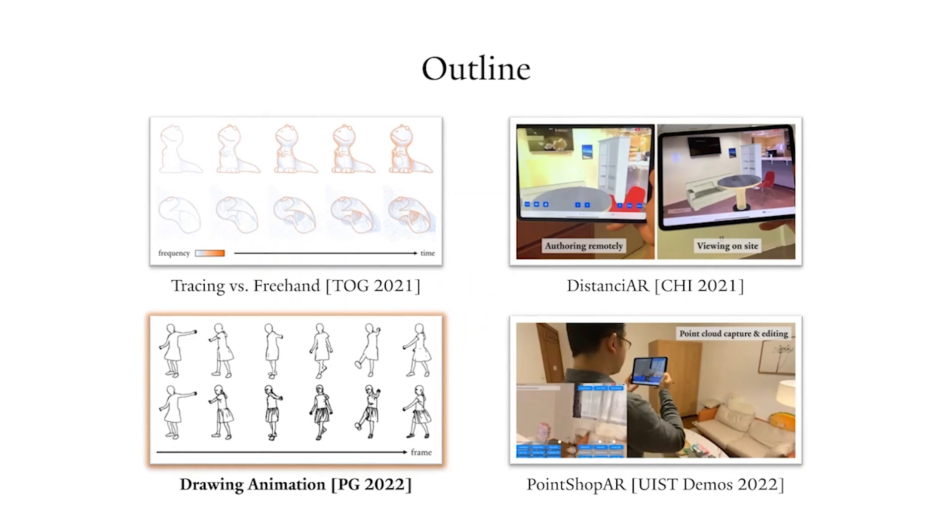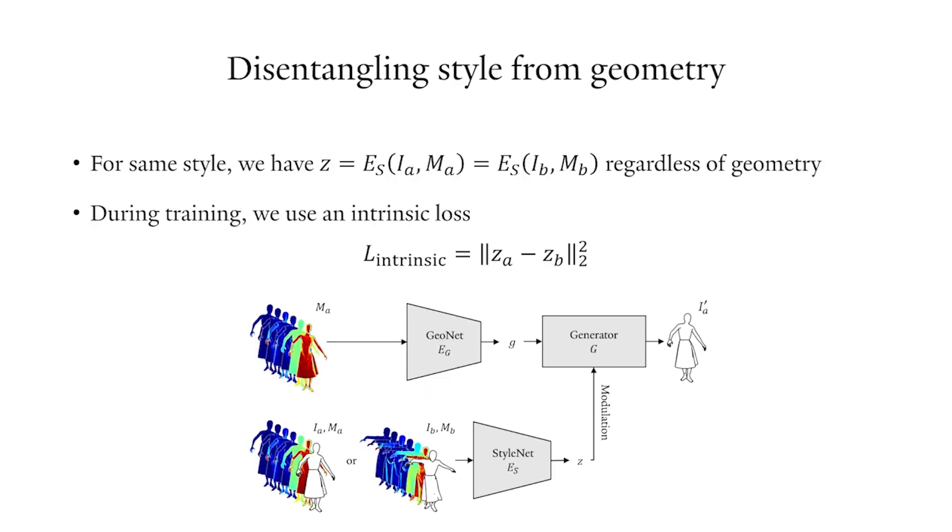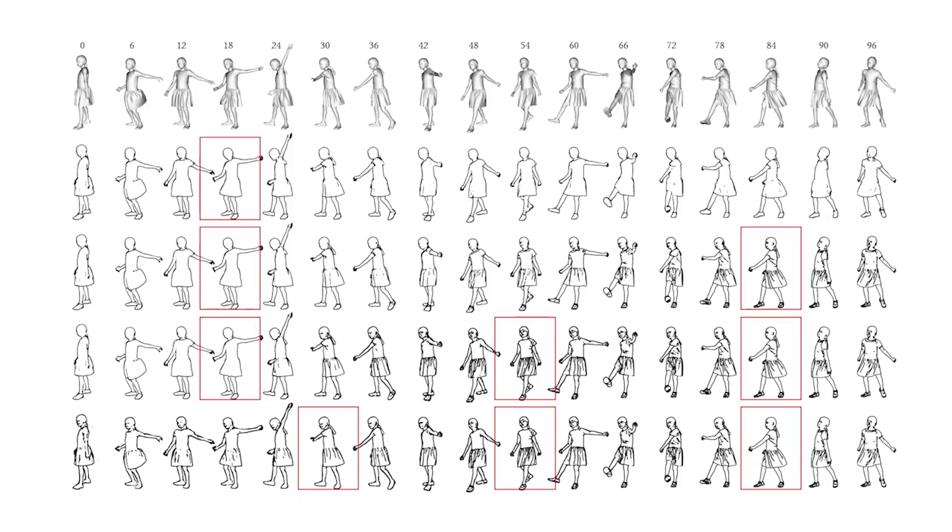Drawing frame-by-frame in animation production is tedious. Next, we introduce a deep learning-based technique for line drawing synthesis in animation. Given a sequence of 3D models and user-created keyframe drawings, our system can generate drawings at all other frames in a style consistent with user input. The learned style space is disentangled from the underlying geometry, enabling smooth style interpolation on static and dynamic frames. With our system, animators only need to draw keyframe sketches in red boxes and can get the best of both worlds, that is user-controlled synthesis.